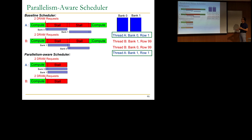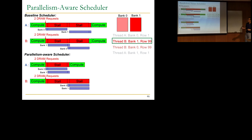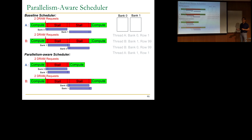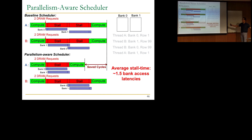While this is going on, both threads stall, but thread A's latencies are being overlapped. At some point thread A's requests are done and thread A can continue computation. Thread B's requests then get serviced in parallel in the banks, and thread B can continue after. What we've achieved is we've shifted how we service the requests, and we've saved a lot of cycles — completed thread A's requests much earlier. Thread B didn't gain but didn't lose either. As a result, the average stall time of the entire system reduces — about one and a half bank access latencies versus two.